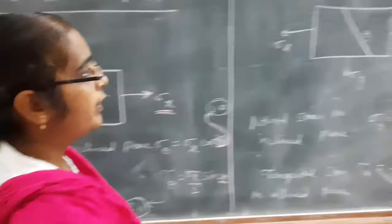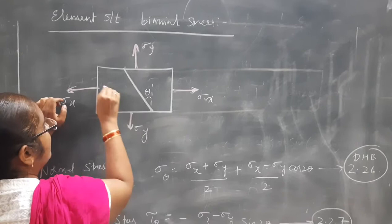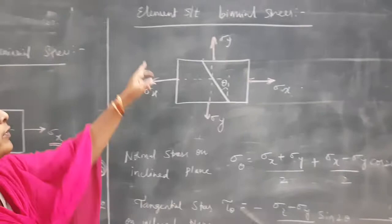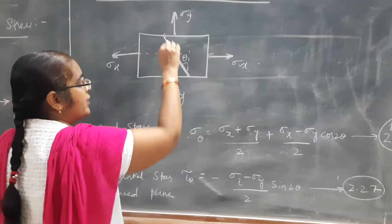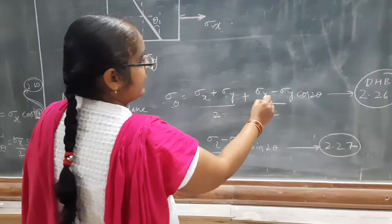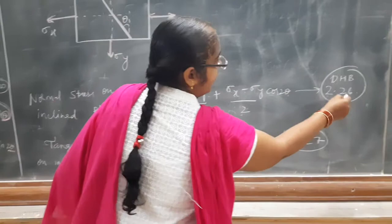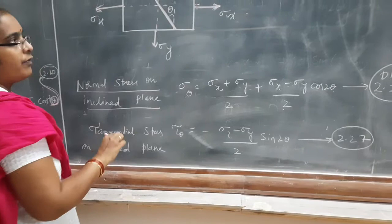Next let us come to the biaxial stress case. Here the stress is acting along the x-axis and also along the y-axis — that is, along both x and y axes — so it is known as biaxial stress condition. To find the normal stress on the inclined plane, sigma theta equals sigma x plus sigma y by 2, plus sigma x minus sigma y by 2 into cos 2 theta. This is equation number 2.26 in your data handbook.